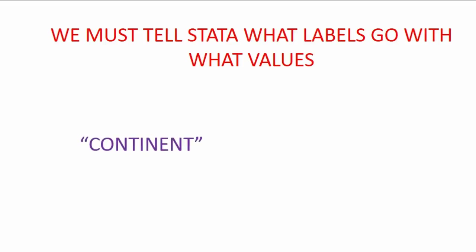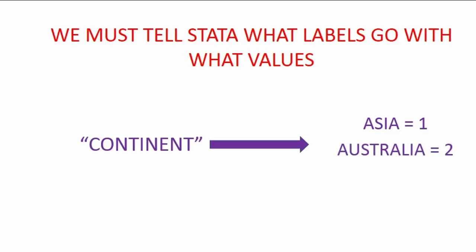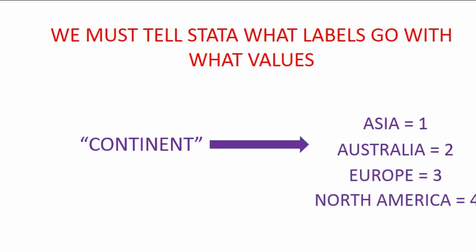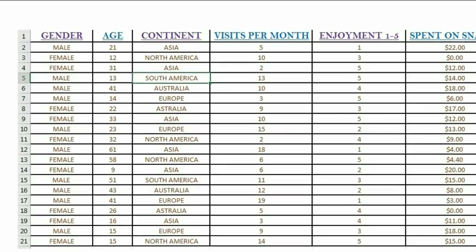When it comes to the variable continent, we will label the value number one with the word Asia, the value number two with the word Australia, the value of three with Europe, the value of four with North America, and the value of five with South America.